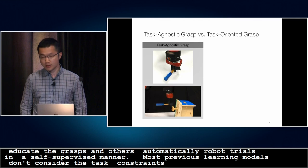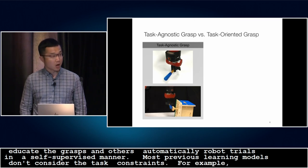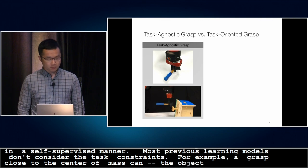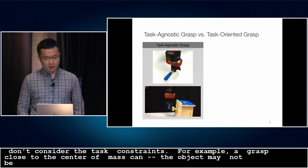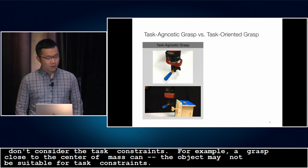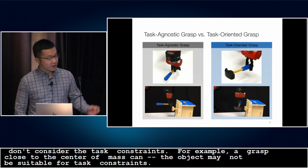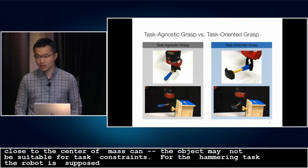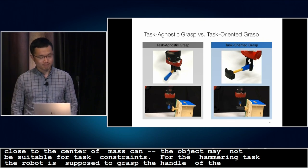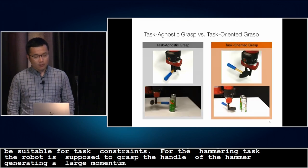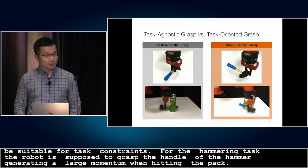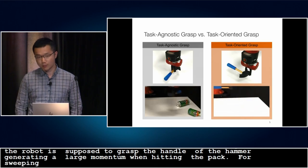A grasp close to the center of mass can robustly lift up the object, but it might not be suitable for specific task constraints. For the hammering task, the robot is supposed to grasp the handle of the hammer and generate a large enough momentum when hitting the target. For sweeping clutter off the table, however, it is better to grasp the head of the hammer and sweep with the long handle.